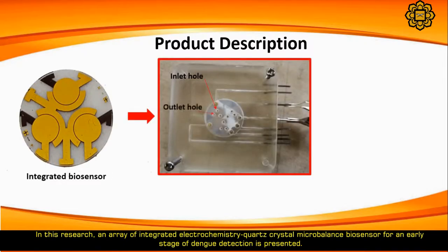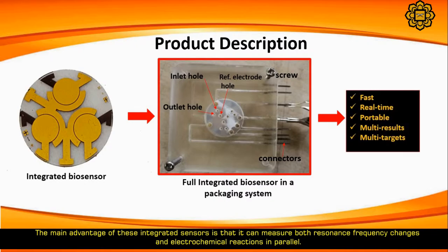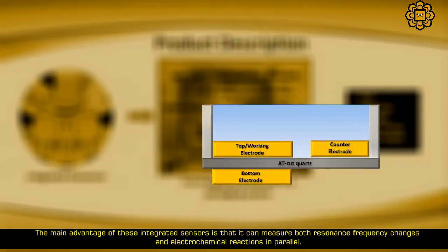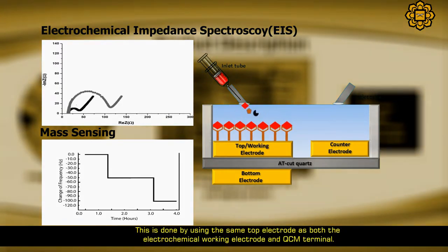The main advantage of these integrated sensors is that they can measure both resonance frequency changes and electrochemical reactions in parallel. This is done by using the same top electrode as both the electrochemical working electrode and QCM terminal.